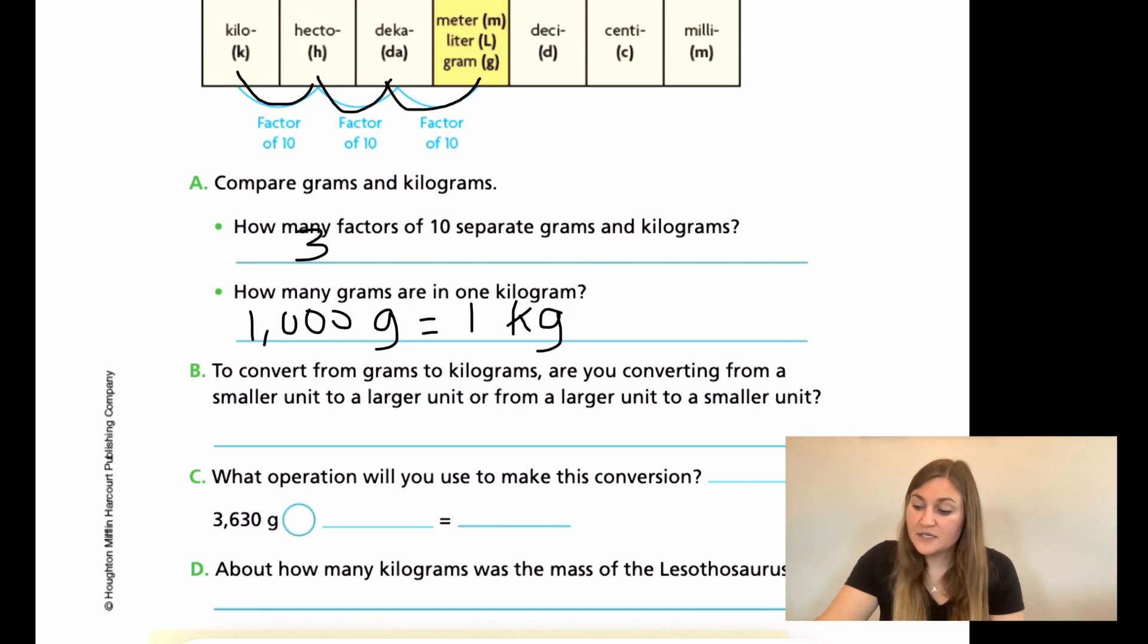Now for B, it says to convert from grams to kilograms, are you converting from a smaller unit to a larger unit or the opposite, from a larger unit to a smaller unit? We are starting with a smaller unit grams, which means it's a lot smaller, and then we're moving to a really big kilogram. Because there's a bunch of grams. There's 1,000 really small grams to equal one kilogram, which is really big. So we're going from the smaller unit to the larger unit.